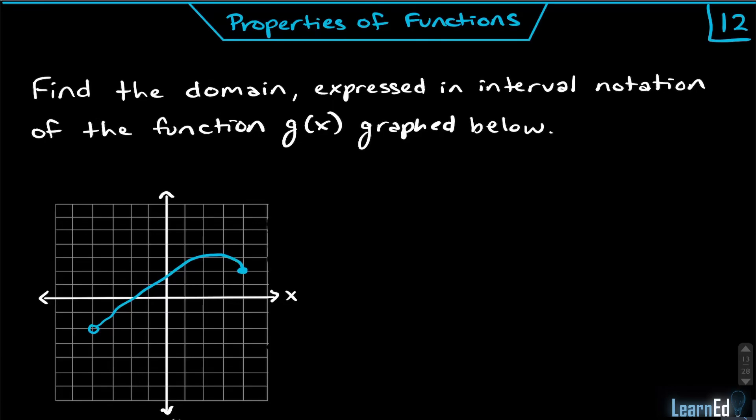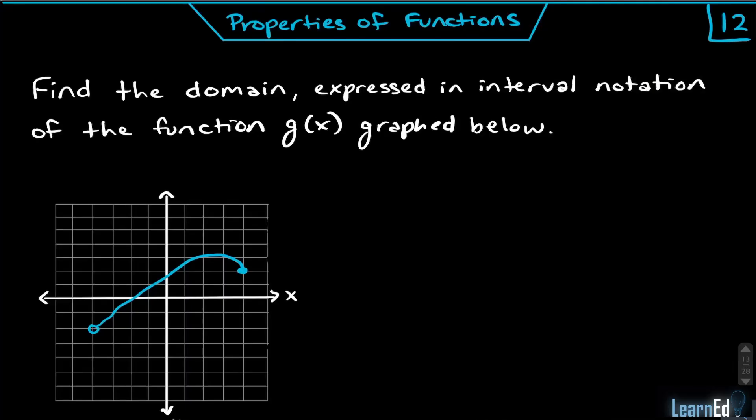We've done our yellow and green sections, so feel free to take another five-minute break. Then come back for the aqua and blue sections — properties of functions and linear functions. Assuming you've taken that break, let's hop back in to properties of functions, problem 12. We want to find the domain expressed in interval notation of the function g(x) shown in the graph.